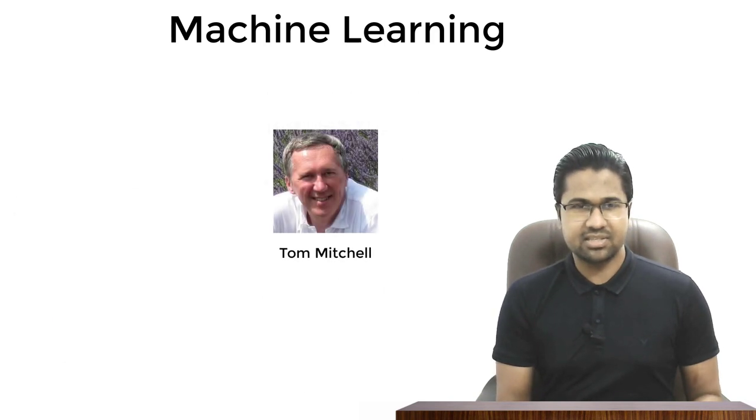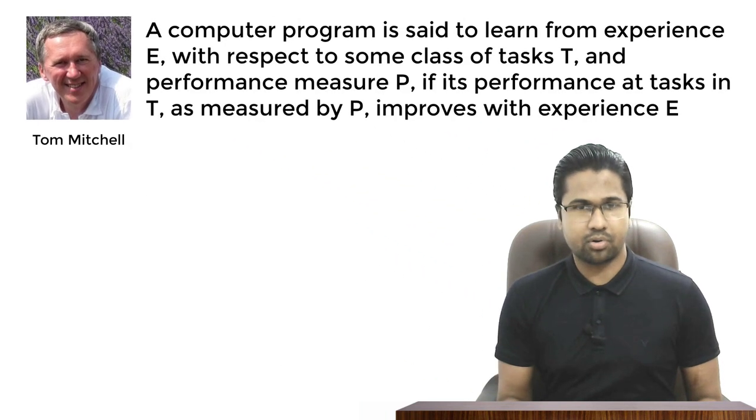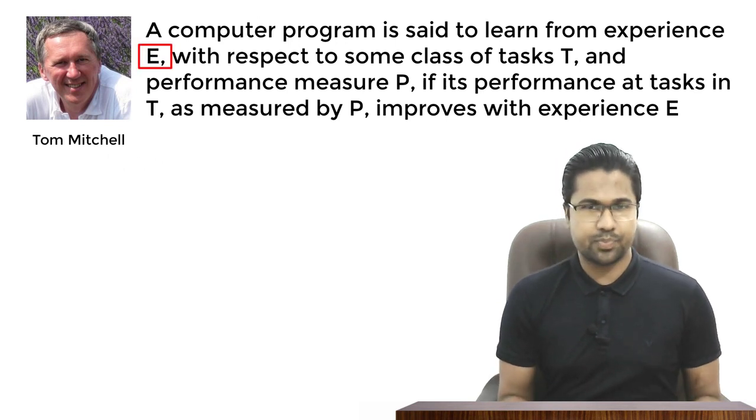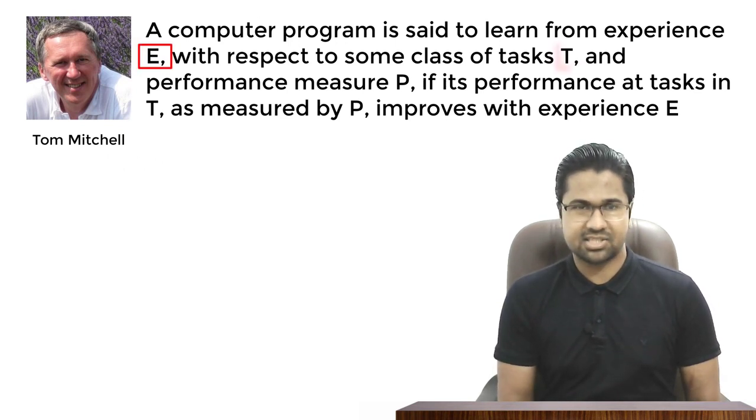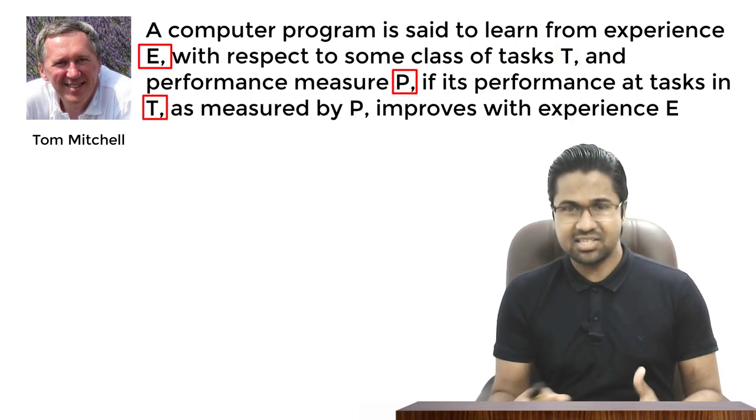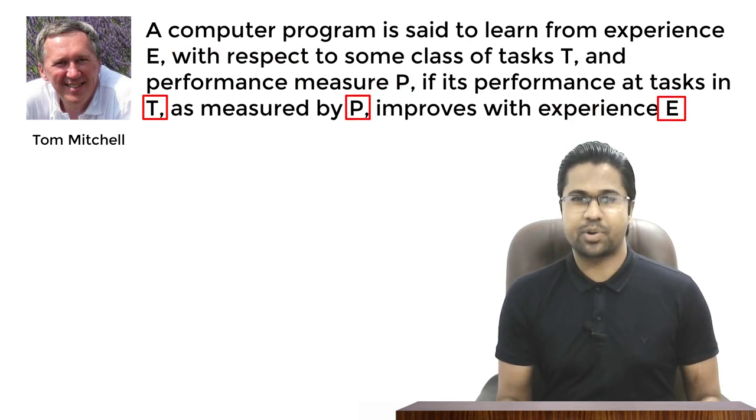In 1998, Tom Mitchell defined machine learning in a much more constructive way. According to him, in machine learning, a computer program is said to learn from experience E with respect to some class of tasks T and performance measure P if its performance at tasks in T, as measured by P, improves with experience E.